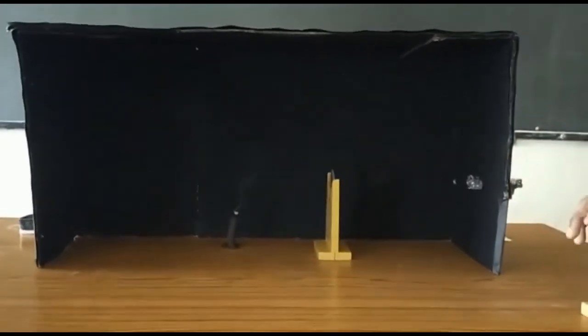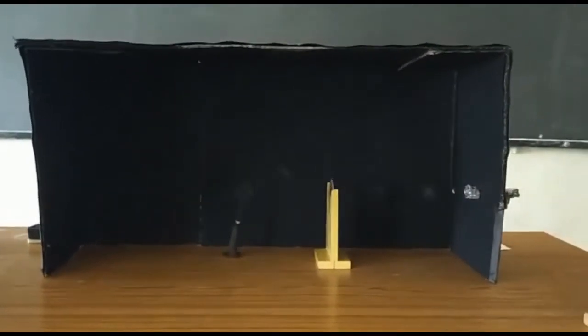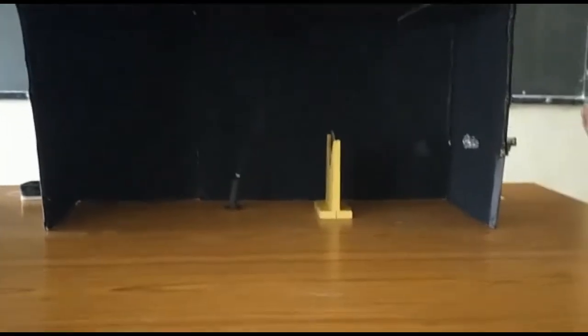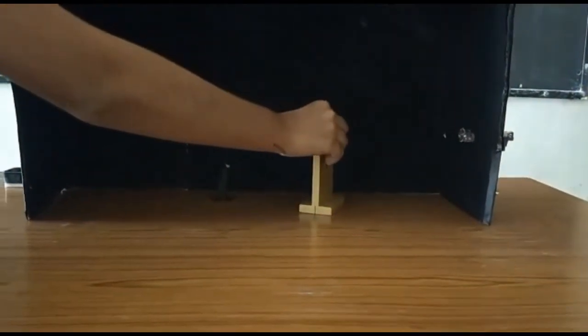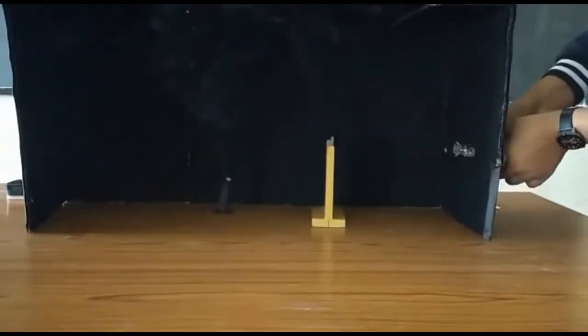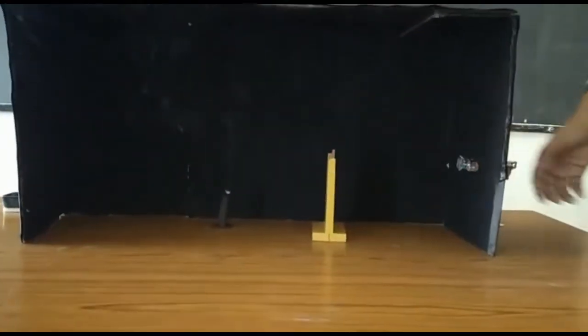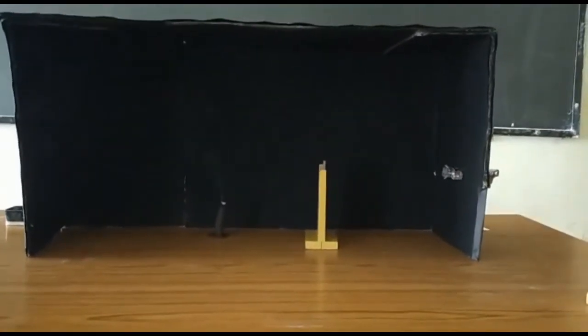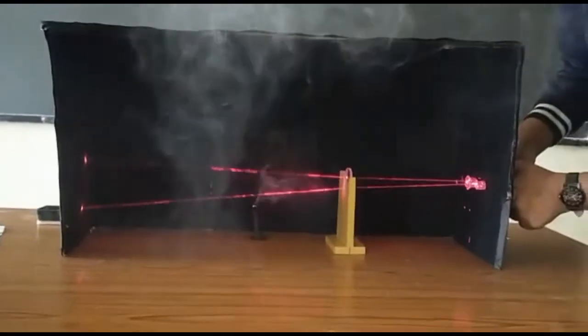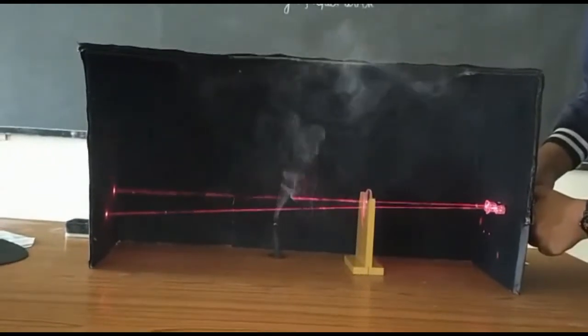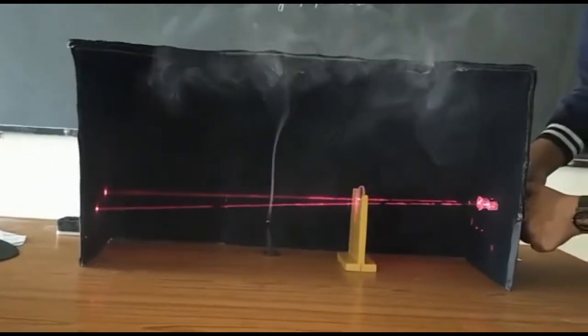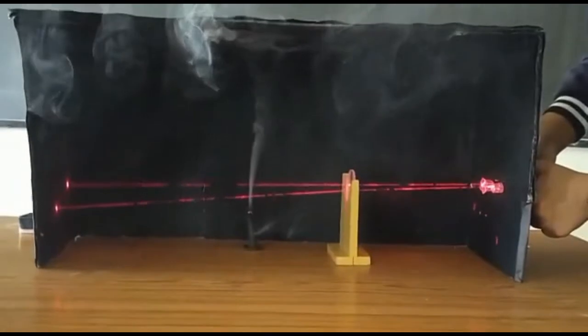Now let's see how the concave lens works. The rays passing through the concave lens get diverged. The concave diverging lens, as the name suggests, separates the rays.